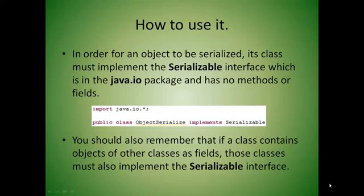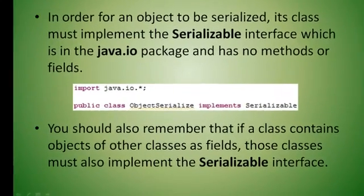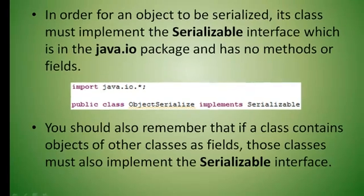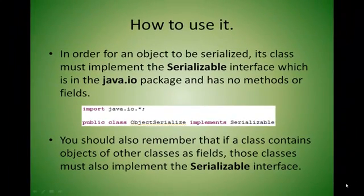In order for an object to be serialized, its class must implement the Serializable interface, which is contained in the java.io package and has no methods or fields. Also, remember that if a class contains objects of other classes as fields, these classes must also implement the Serializable interface in order for the program to work properly.